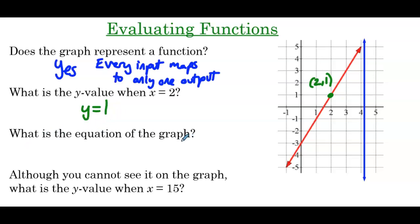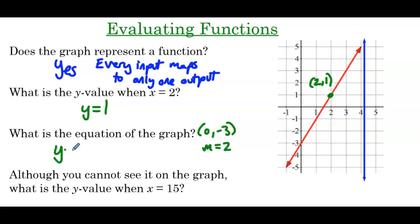What is the equation of the graph? Well, we have a nice y-intercept — it's the point (0, -3). We have a good slope: up two boxes to the right one, so our slope is 2. So we can write the equation of this line in slope-intercept form, and that's going to be y = 2x − 3.